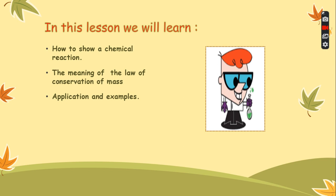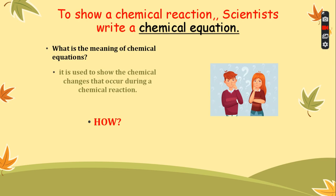In any chemical reaction, scientists usually use a chemical equation. If I want to describe a chemical reaction that is happening, we use a chemical equation. So what is the meaning of chemical equations? Just like equations that we use in math, as I told you before, we use them to see the changes that occur during a chemical reaction.